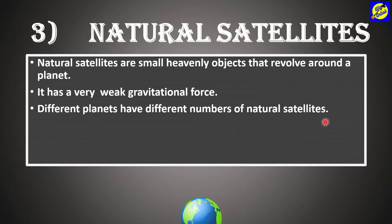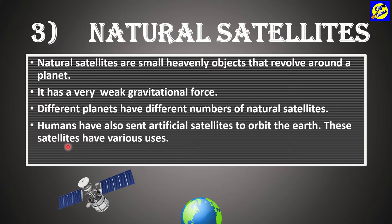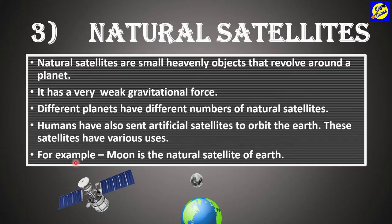Different planets have different numbers of natural satellites. Humans have also sent artificial satellites to orbit the Earth. These satellites have various uses such as communication or weather forecasts. For example, the Moon is the natural satellite of Earth.